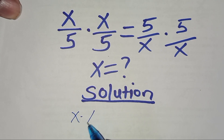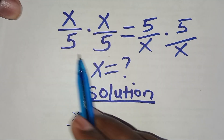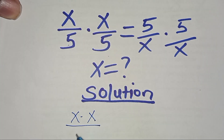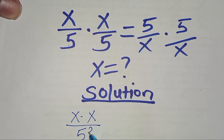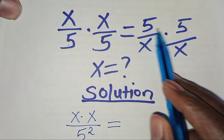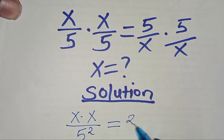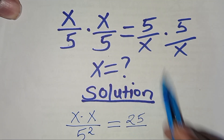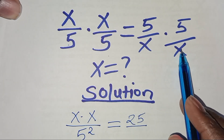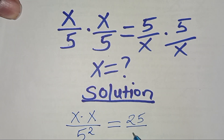So this is x times x divided by 5 times 5, which is 5 to the power of 2. This is equal to 5 times 5, which is 25, divided by x times x, which is x to the power of 2.